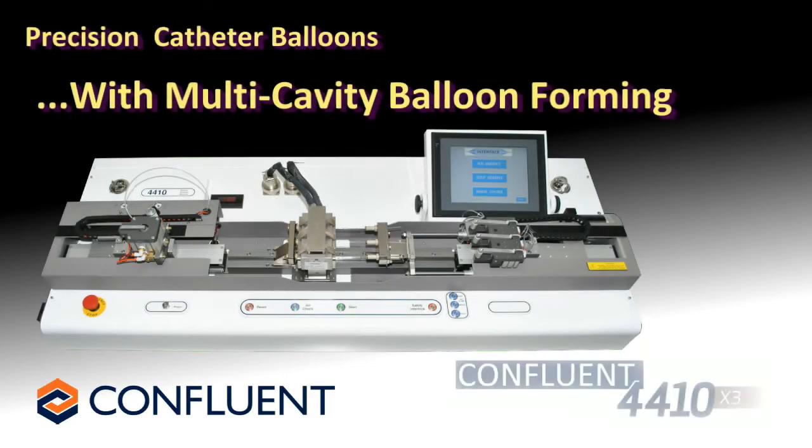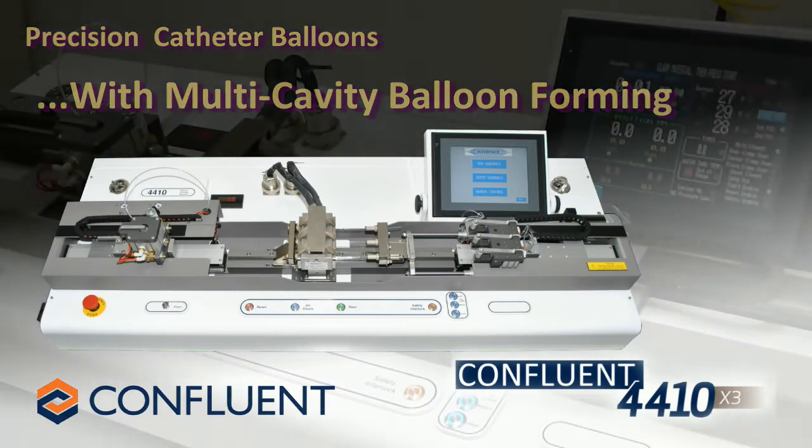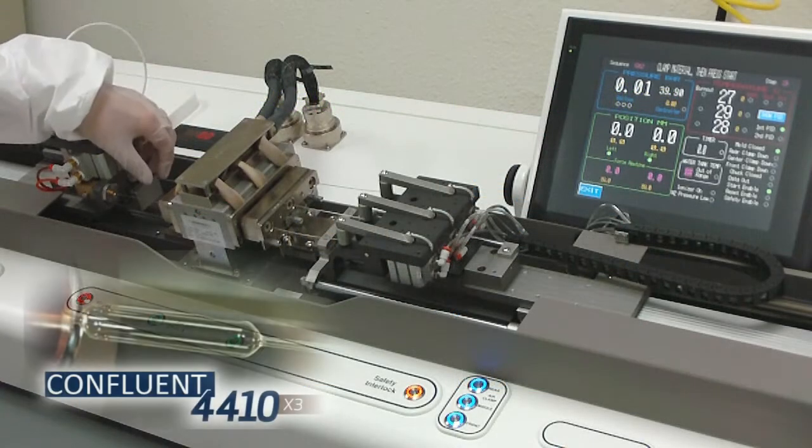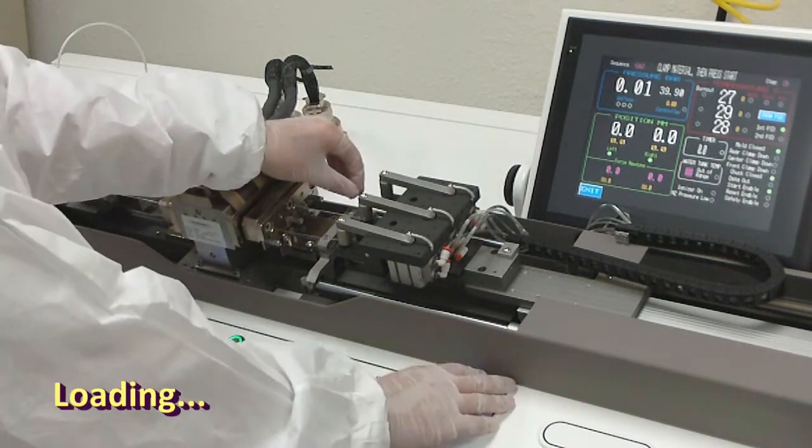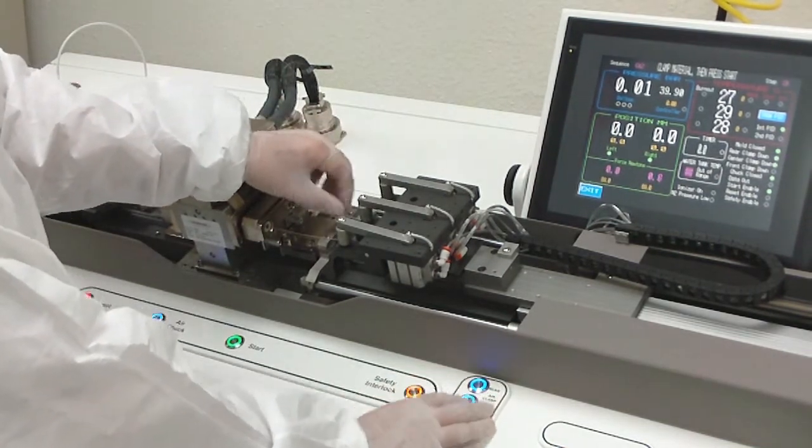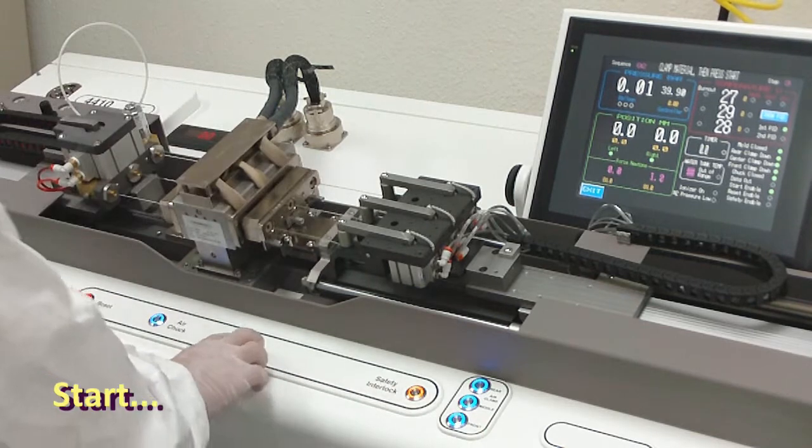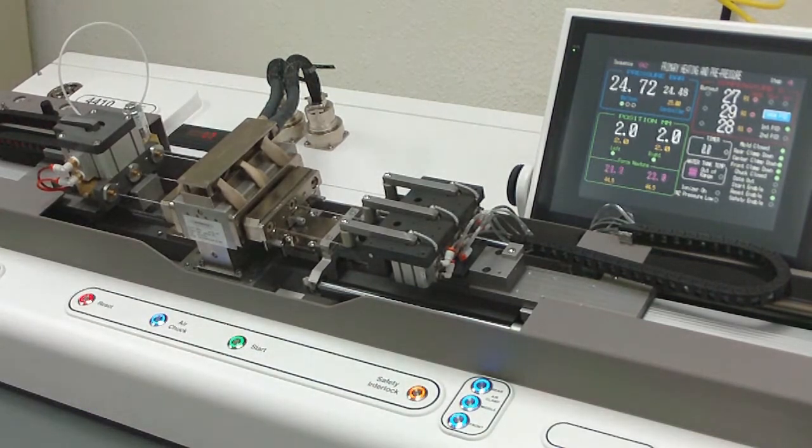Confluent Medical Technologies, a pioneer of computerized balloon forming, uses precision extruded balloon tubing in metal molds with precise heating and cooling, and exact calculated stretching and pressurization parameters. This time-proven process works very well for balloon production where small to medium quantities are needed.